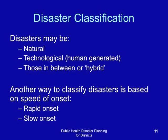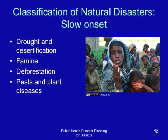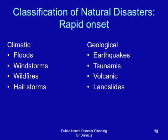Slow onset natural disasters could include drought and desertification, famine, deforestation, pests, and plant diseases. Rapid onset natural disasters may include climatic disasters like floods, wind storms, wildfires, and hailstorms, and geological disasters like earthquakes, tsunamis, volcanic activity, and landslides.